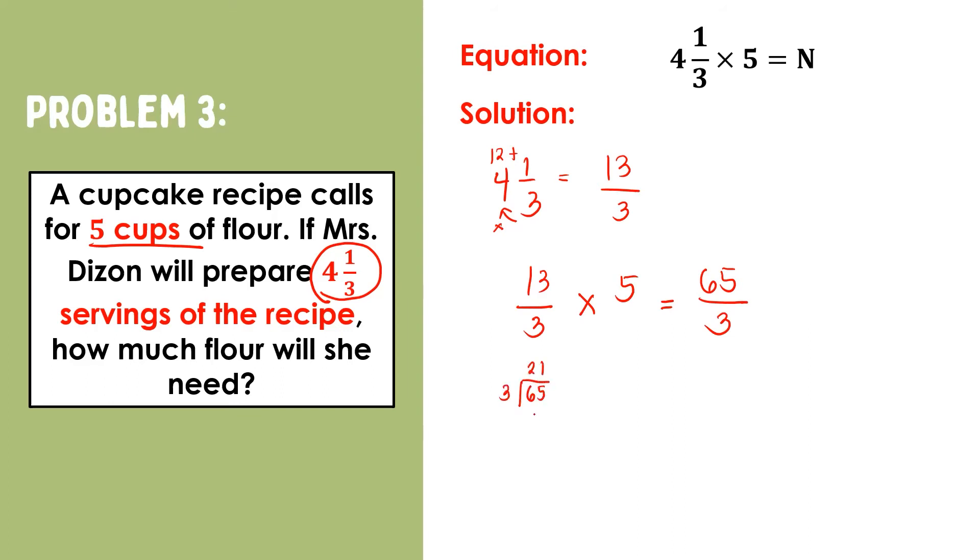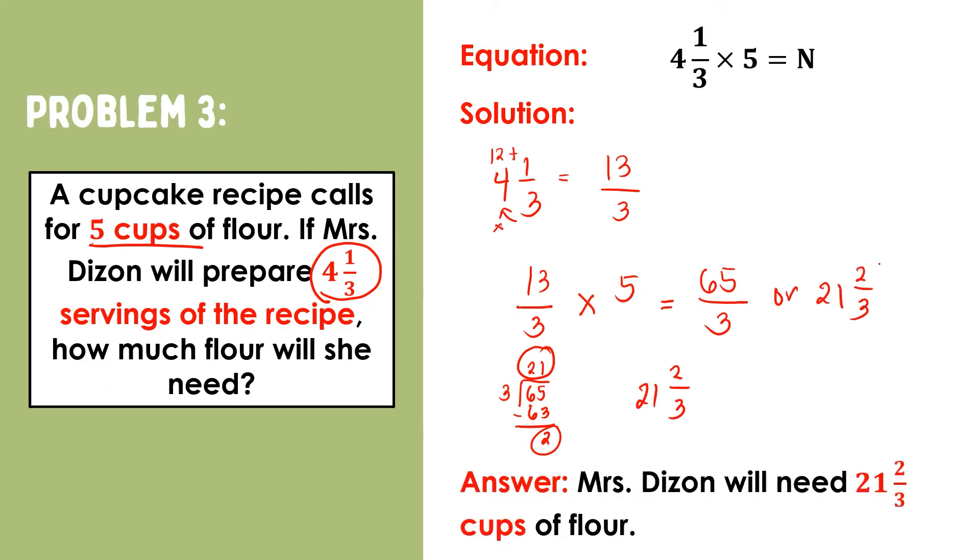Sixty-five divided by three, that is twenty-one with a remainder of two. Recall that the quotient will be the whole, the remainder will be the numerator. Then, we copy the denominator. We now have twenty-one and two-thirds. Since two-thirds is already in its simplest form, we can now say that Mrs. Dyson will prepare twenty-one and two-thirds cups of flour.